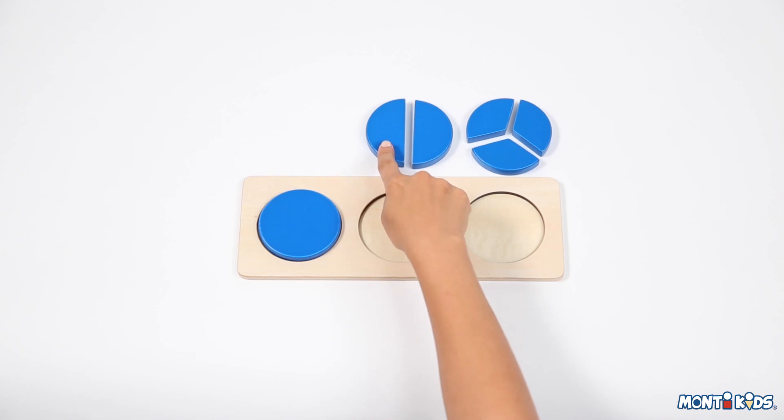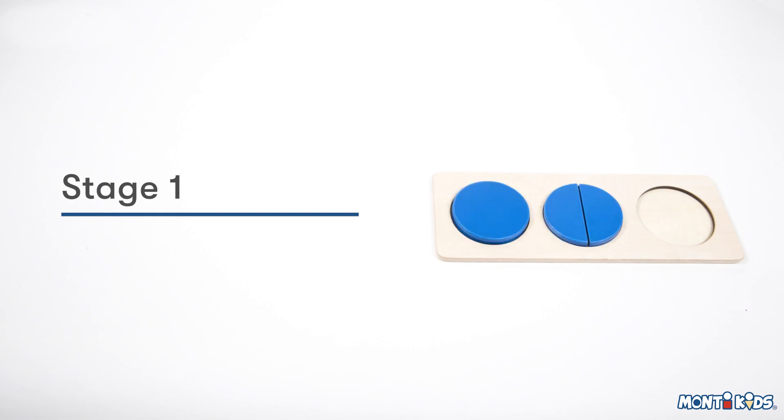Repeat with the next piece, then invite your child to replace the remaining pieces. We begin by presenting the whole, halves, and thirds.